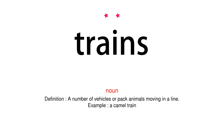Noun. Definition: A number of vehicles or pack animals moving in a line. Example: A camel train.